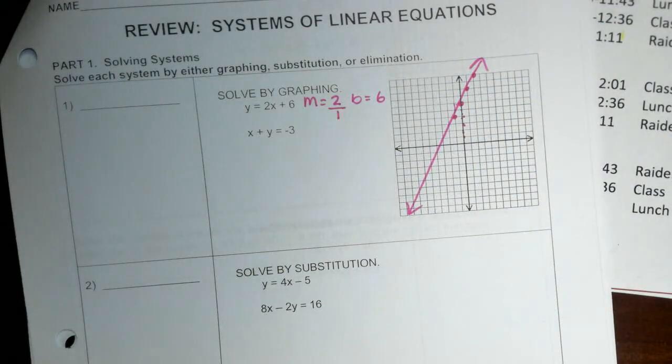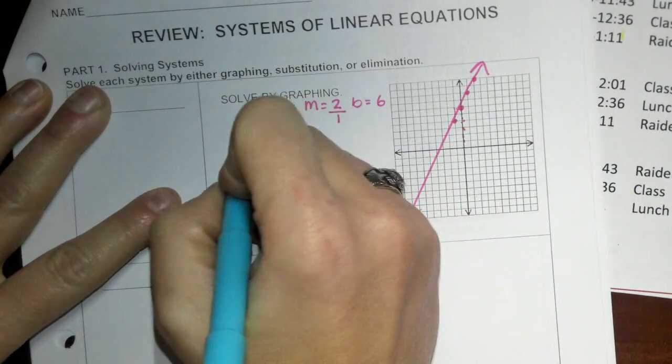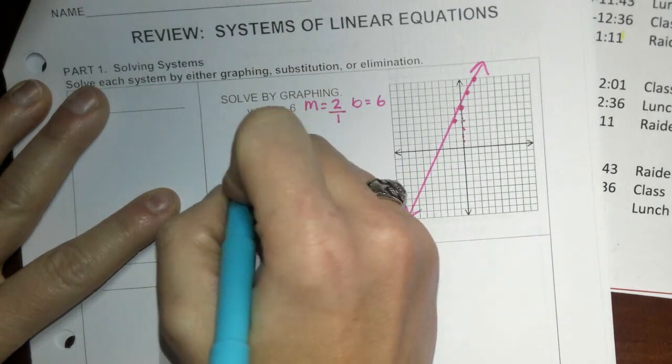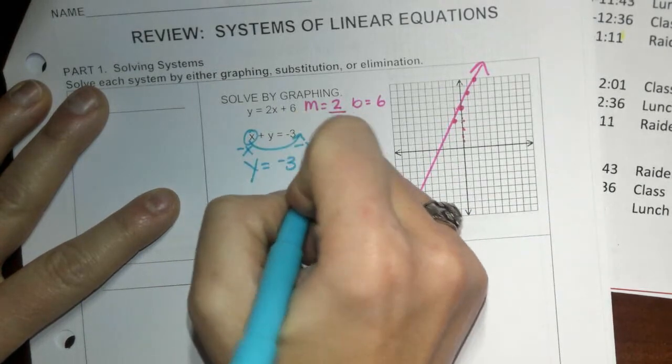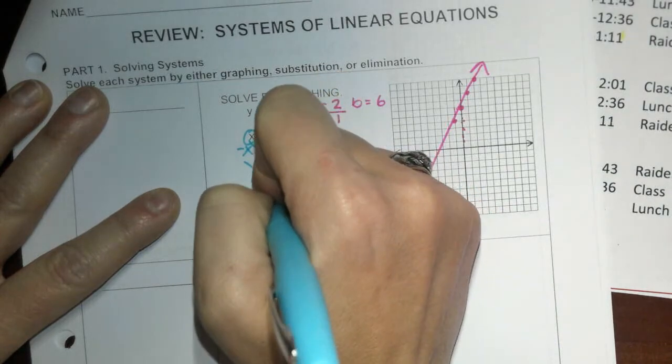All right, and in my next one I see here this is not in y equals, it's not in slope-intercept form, so I need to move this x to the other side. So when I subtract it, I get y equals negative 3 minus x.